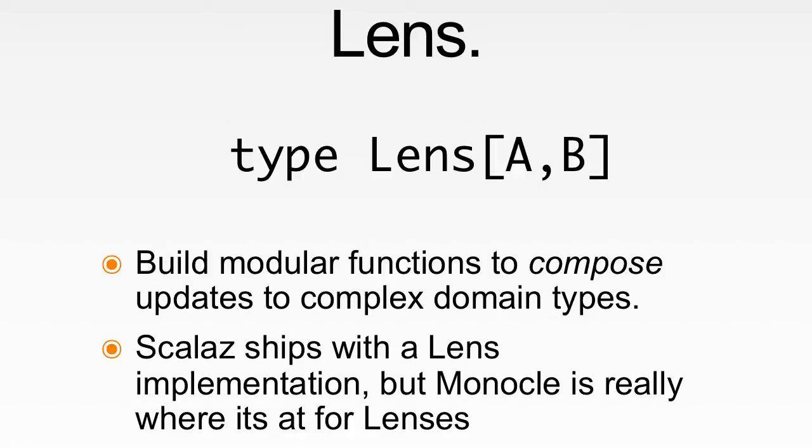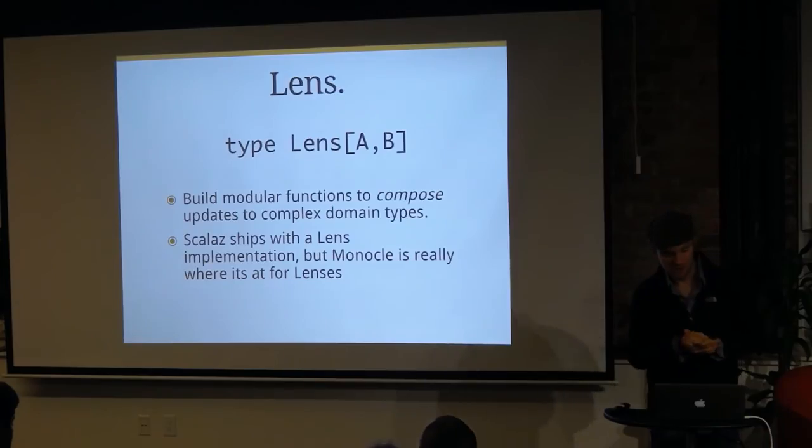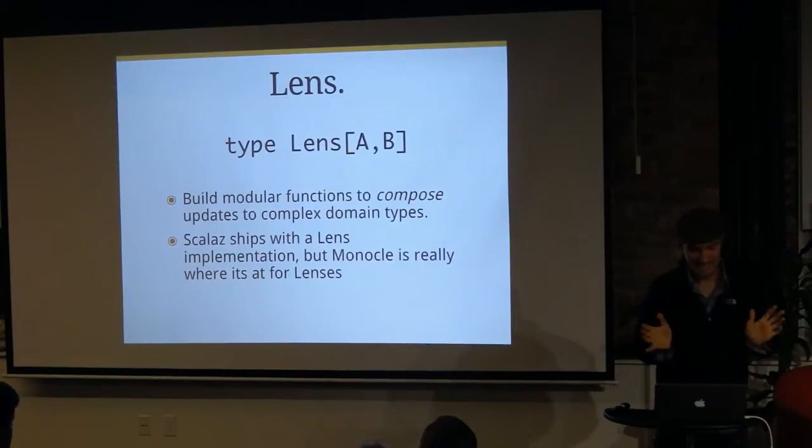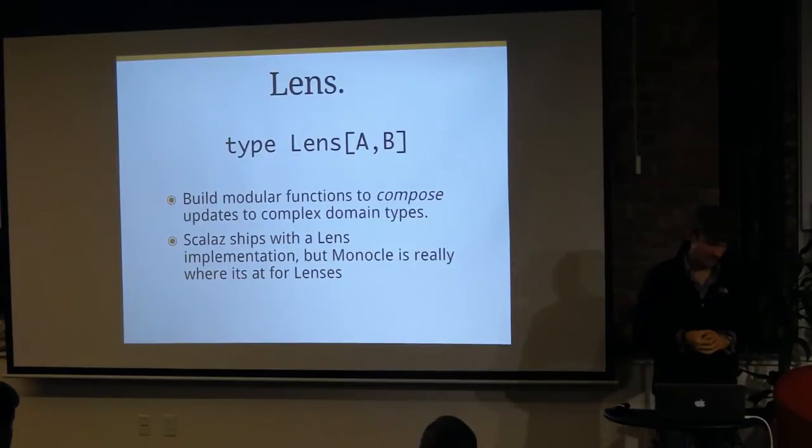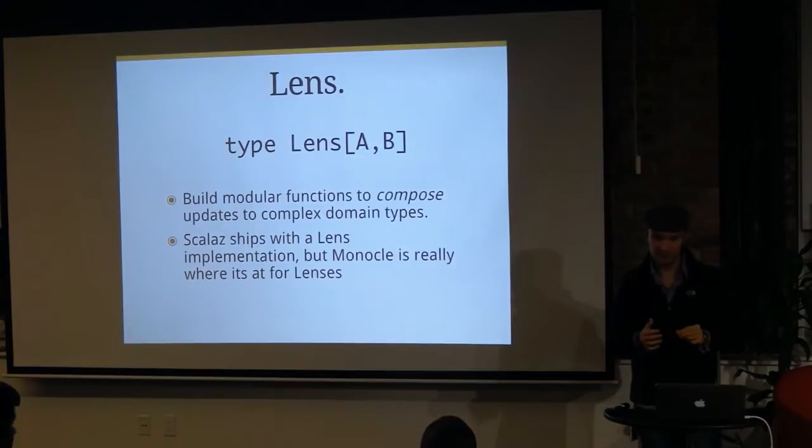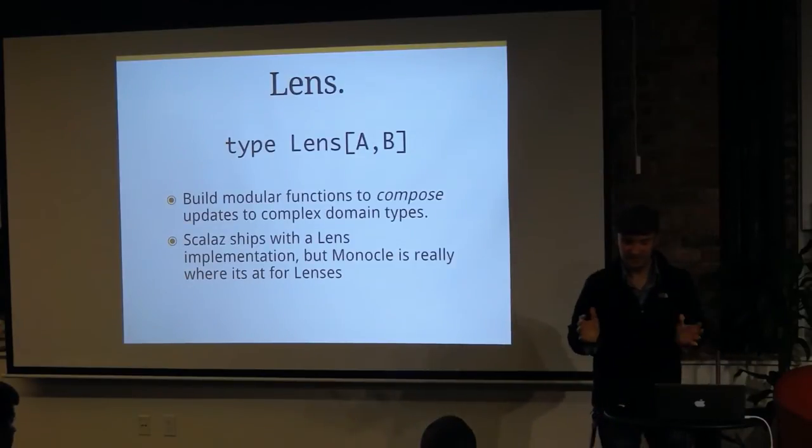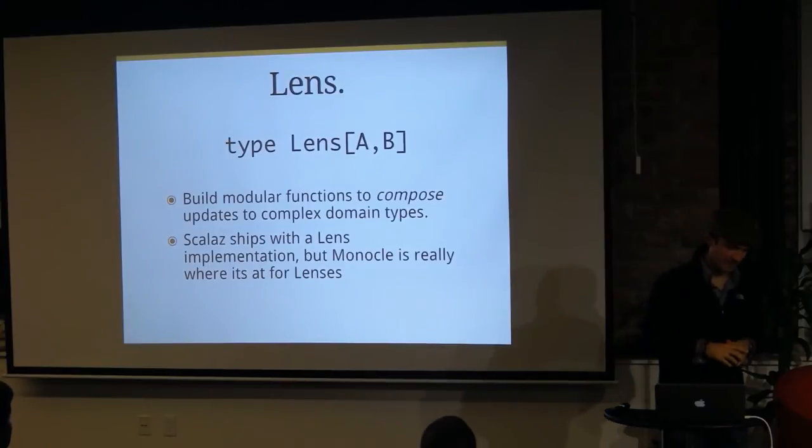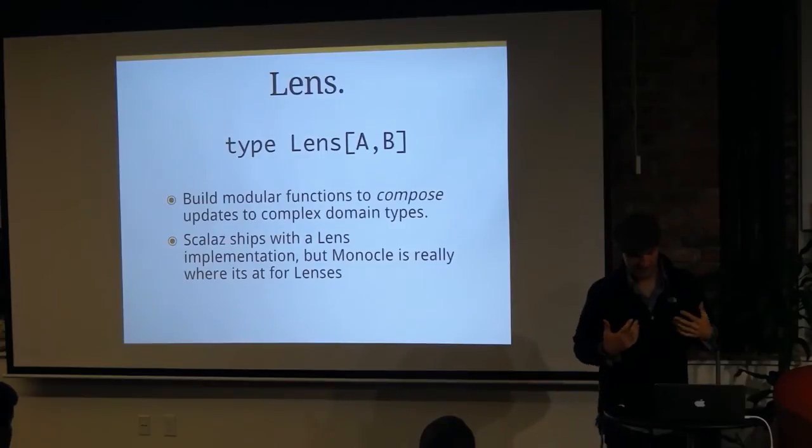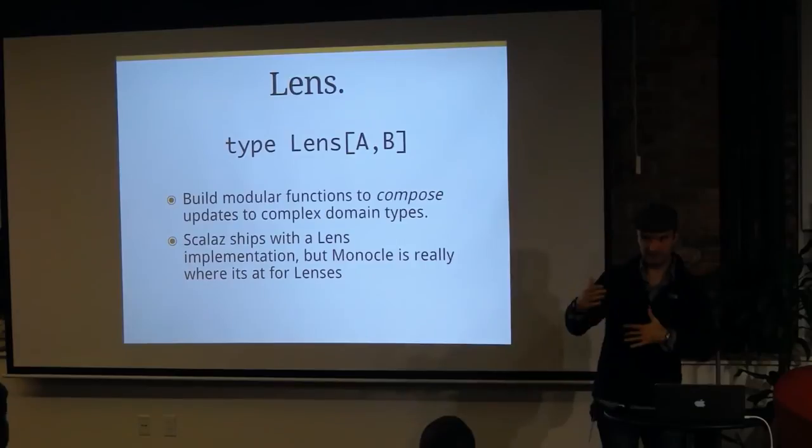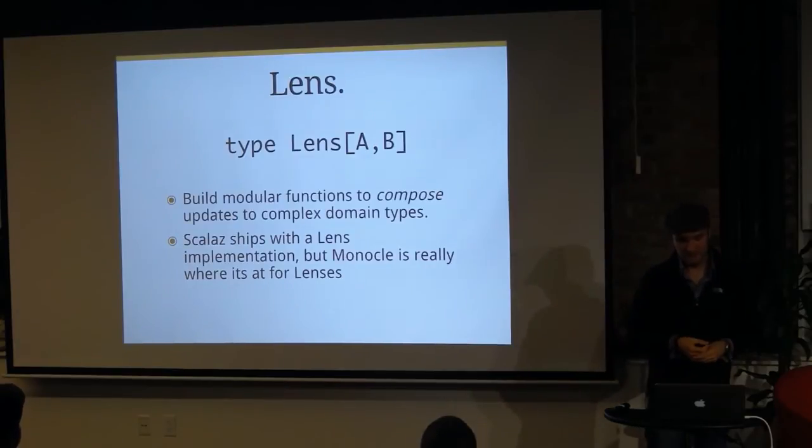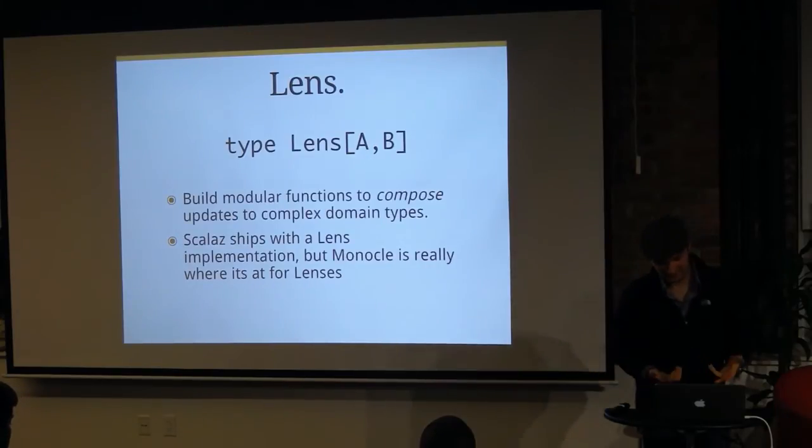So, lenses. Essentially, they allow you to build modular functions to compose updates of any type of domain type. Scalaz does ship with a lens. It's kind of grown in complexity over time. It was very simple. It did use to just fit in one Scala file. Now, it's like a whole set of Scala files and different things. It's nice and it works, but it's a little bit boilerplate-y because you end up having to define all these things for every single type you want to use and it's not that nice.